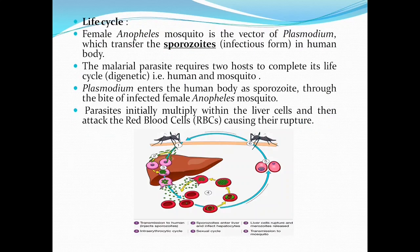Life Cycle of the Malarial Parasite: The female Anopheles mosquito is the vector of Plasmodium, which transfers the sporozoites — the infectious form — into the human body. The malarial parasite requires two hosts to complete its life cycle; it is called digenetic. These two hosts are human and mosquito. Plasmodium enters the human body as sporozoites through the bite of an infected female Anopheles mosquito. The parasite initially multiplies within the liver cells and then attacks the red blood cells, causing their rupture.